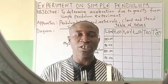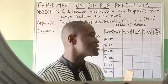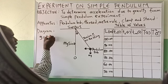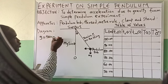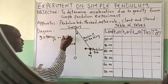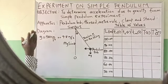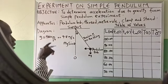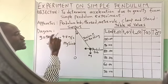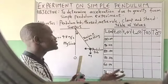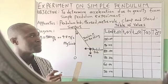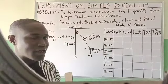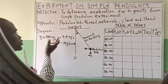Acceleration due to gravity, as you know from elementary school, is denoted as g, which equals 980 cm per second squared or 9.8 m per second squared. This is the value of acceleration due to gravity. The essence of this experiment is to determine this value.